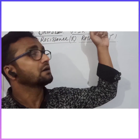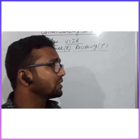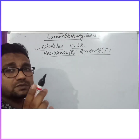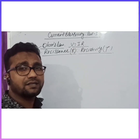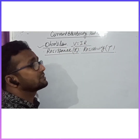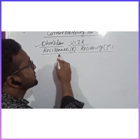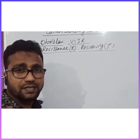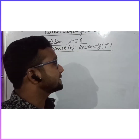Hi, today I will explain the concept of resistance and resistivity, which is part of current electricity. This video will be the third part of the current electricity series. In the previous video I discussed Ohm's law, and from Ohm's law we obtained the formula V equal to IR, already discussed in part two. Here I is current and R is resistance, and today I will explain what resistance is.